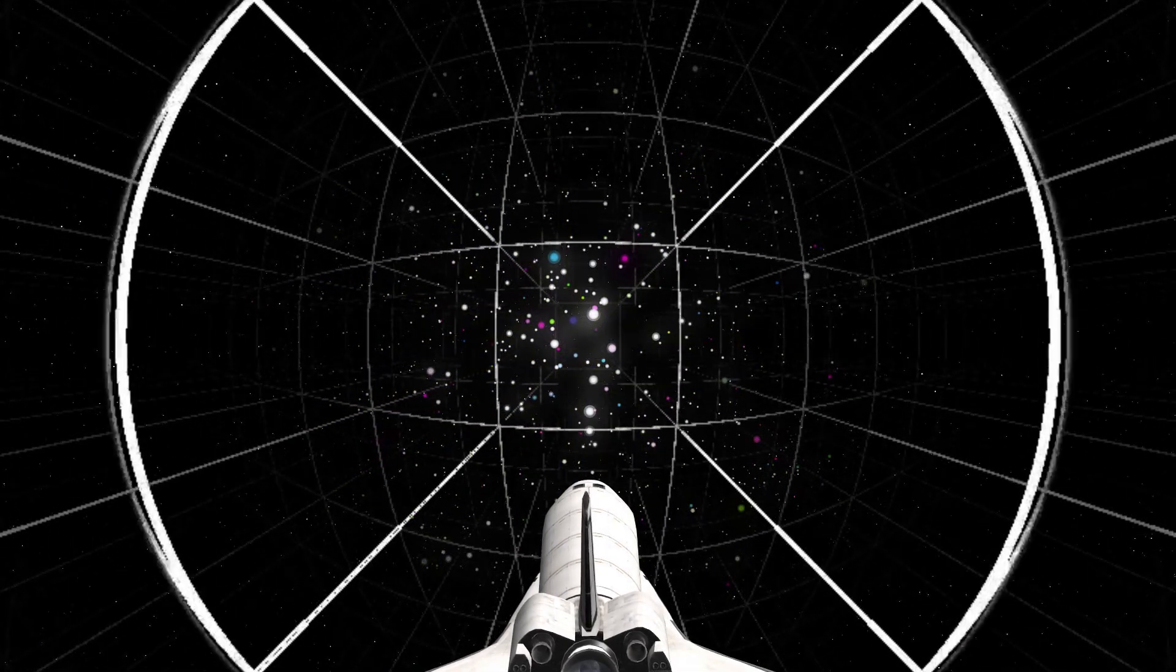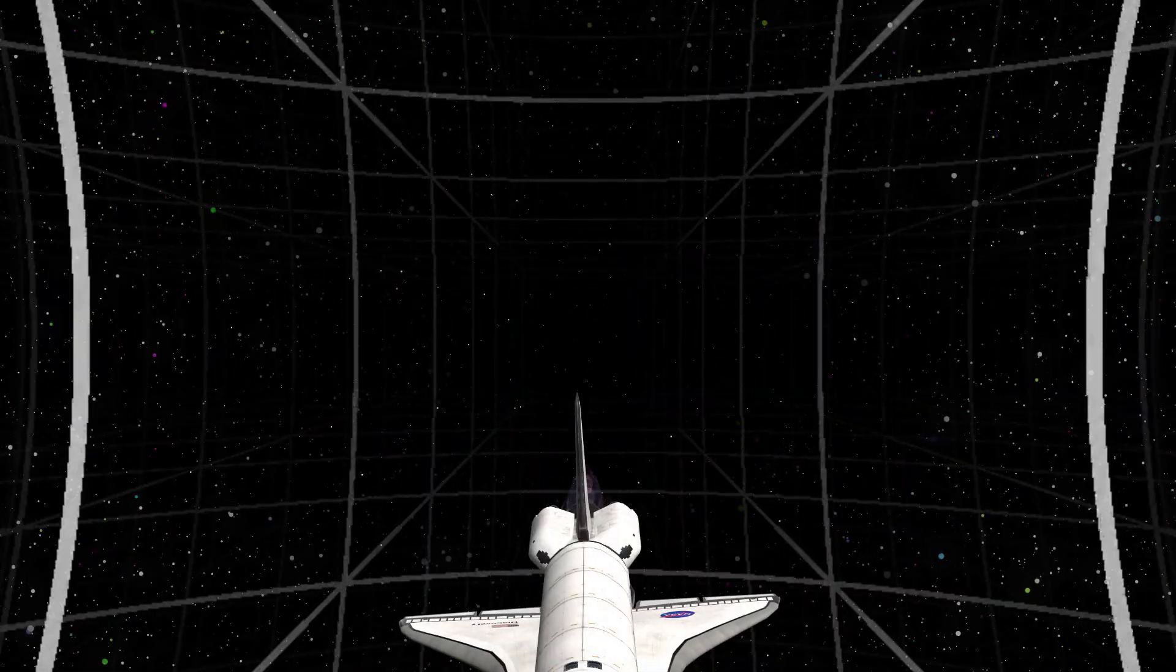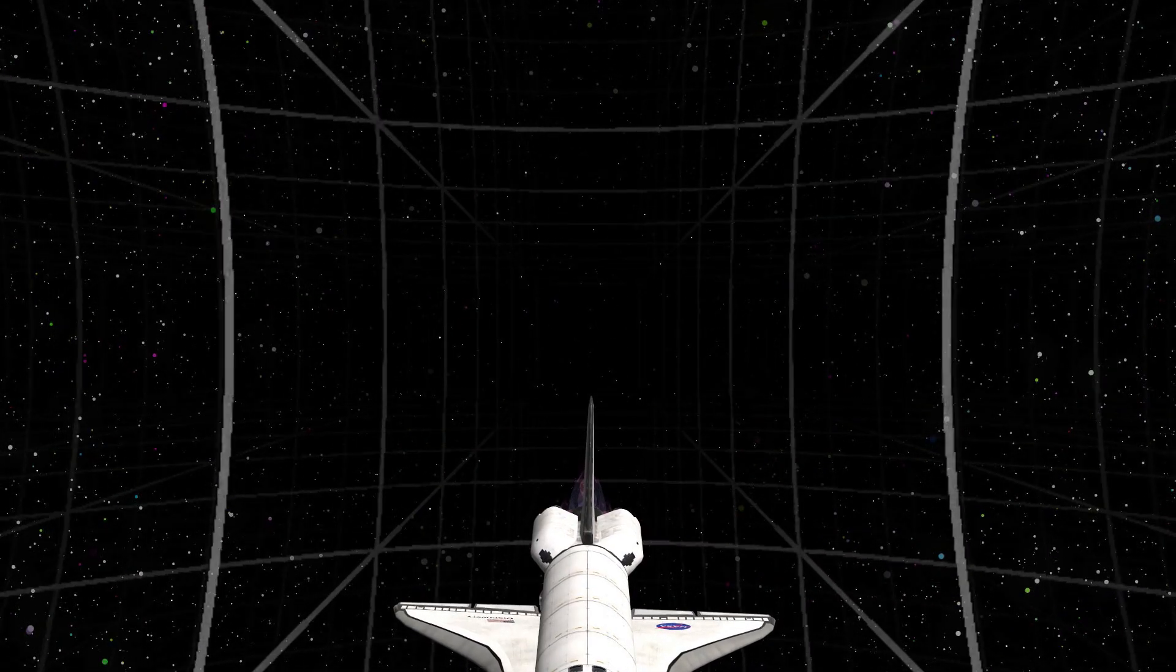Stars in front seem to recede but grow brighter, while the sky behind stretches, appearing darker and closer.